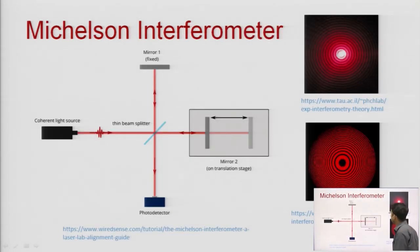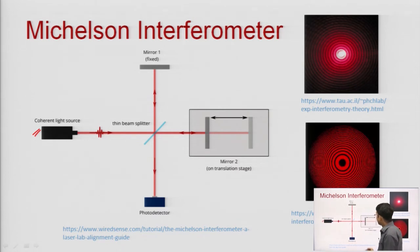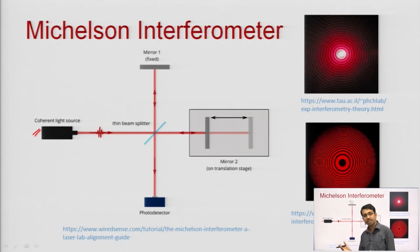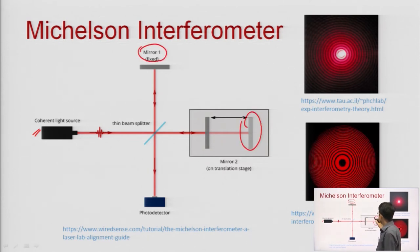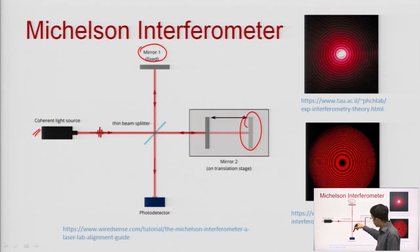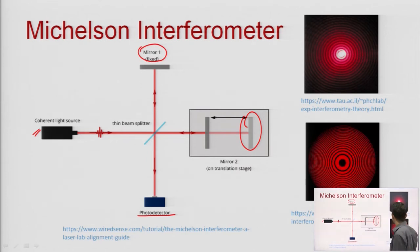This is the arrangement of the Michelson interferometer. There is a coherent light source — mainly lasers are used — and a thin beam splitter: a transparent sheet of glass that is 50% reflecting and 50% transmitting, partly silvered. 50% of the light is reflected in one direction and 50% is transmitted in another direction, creating two rays. Mirror M1 and Mirror M2 reflect these two rays back, and they interfere with each other on a photo detector or screen, producing a circular interference pattern.